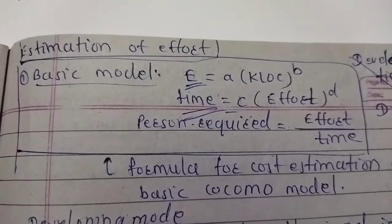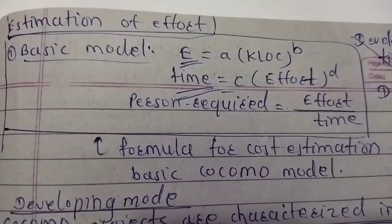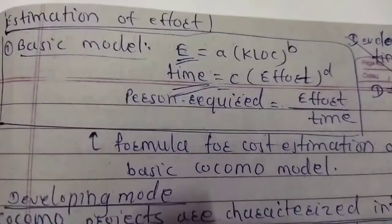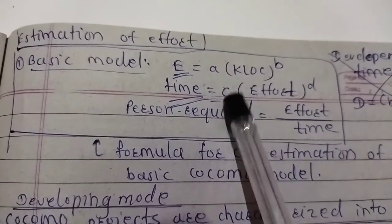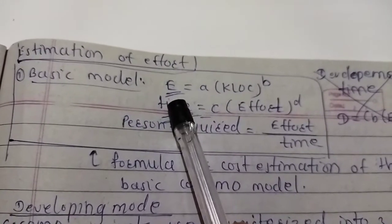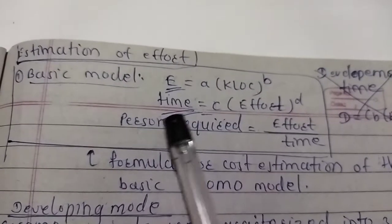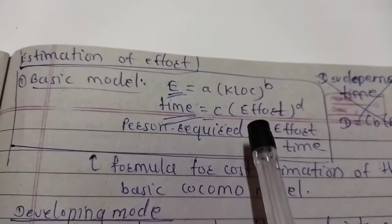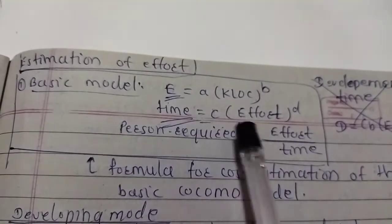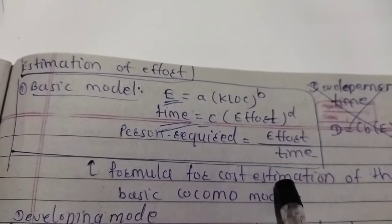Most important is the estimation of efforts. In every exam there is a question on this COCOMO model to estimate the efforts and time required for software projects. If we are given KLOC — number of lines of code — we can calculate the effort required. Effort is in persons per month. Time is calculated from effort — number of hours required. Total number of persons required equals effort divided by time. A and B are constants always given in the example.